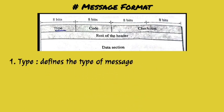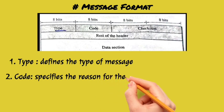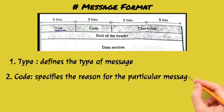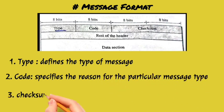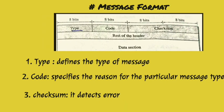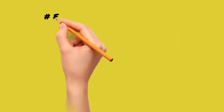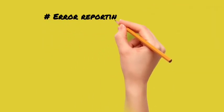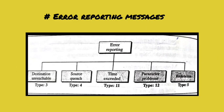Let's see the message format. We have a type, code, and checksum. Type tells us what kind of message it is. Code specifies the reason for a particular message type. Checksum detects errors. There is the first category — the error reporting message — and there are 5 types of error reporting messages.